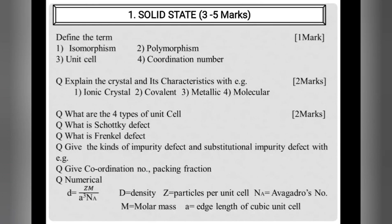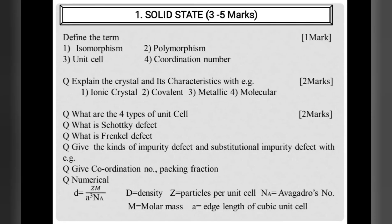Solid state has a 3–5 marks weightage. This may be divided into two to three mark questions or five mark divisions with one two-mark and one three-mark question. Important one-mark definitions from this topic include isomorphism, polymorphism, unit cell, and coordination number.